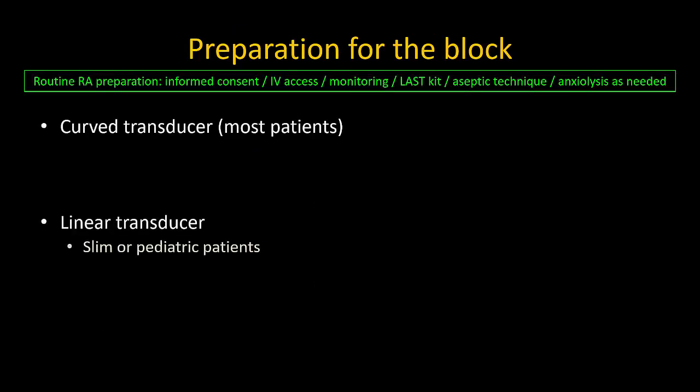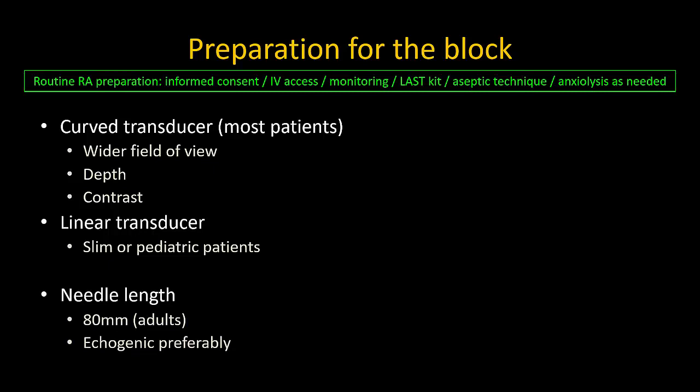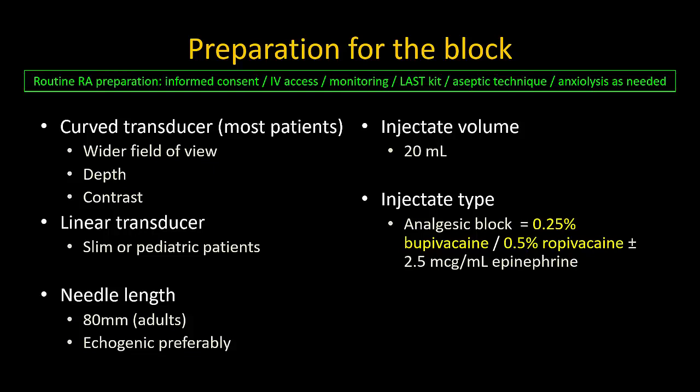I recommend a curved probe in most adult patients unless they are very slim. The wider field of view helps with sonoanatomy recognition, and it often results in better contrast and a clearer view of fascial layers. Resolution is not important in this block. A longer 80 mm needle is usually needed in adult patients. 20 ml is a sufficient volume. I most commonly perform this as an analgesic block using 0.25% bupivacaine or 0.5% ropivacaine, always with epinephrine to reduce systemic uptake and reduce the risk of local anesthetic systemic toxicity.